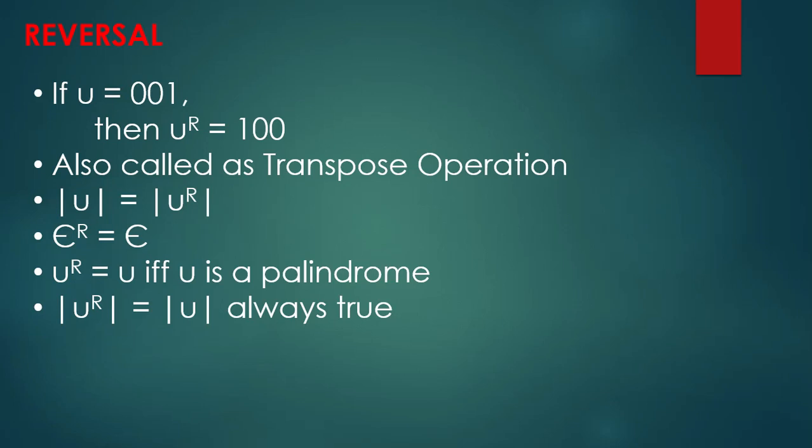If we have a string 001 from alphabet {0,1}, then the reverse of that string equals 100. This is also called the transpose operation. The reverse has the same length as the original. Epsilon reversed is epsilon. If a string and its reverse are equal, we call that string a palindrome — for example, DAD.